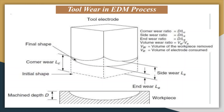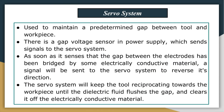The servo system is another component of the EDM system. It is used to maintain the pre-determined gap between the tool and workpiece. There is a gap voltage sensor in the power supply which sends a signal to the servo system as soon as it senses the gap between the electrodes. The servo system will keep the tool moving towards the workpiece surface so that debris particles can be flushed out with the dielectric fluid, clearing out electrically conductive materials.